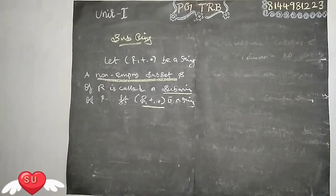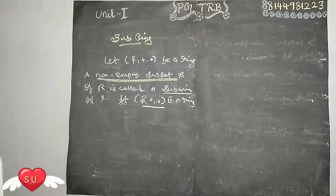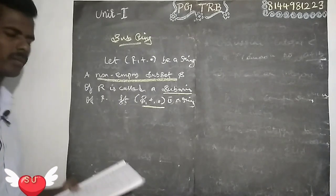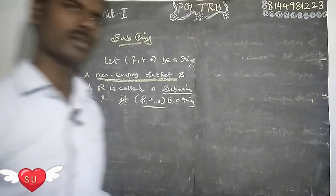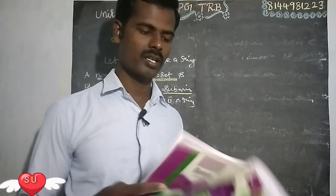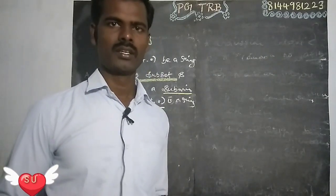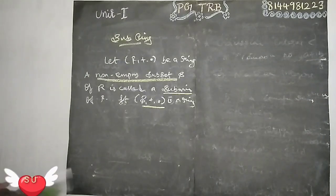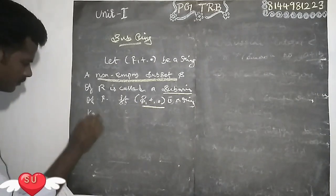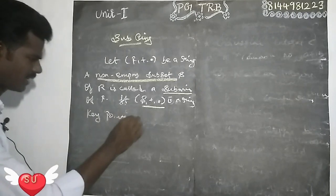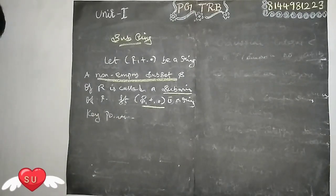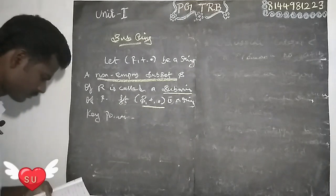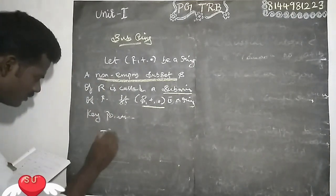Now we can look at key points. If you have a multiple-choice question, consider the key points. Next, we will talk about the key points — the first one involves the ring example and theorem.